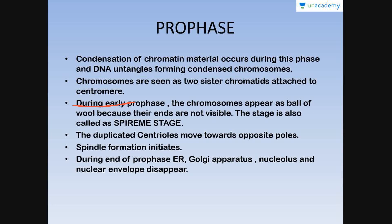During early prophase, chromosomes appear as a ball of wool because their ends are still not clear; this stage is also referred to as the spyrum stage, as they appear like a loosely packed ball of yarn. Also during this stage, centrioles that duplicated during the S phase of interphase move towards the opposite poles and initiate the formation of spindle fibers. As prophase comes to an end, the endoplasmic reticulum, Golgi apparatus, nucleolus, and nuclear envelope start to disappear.